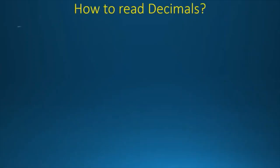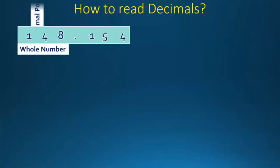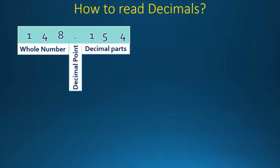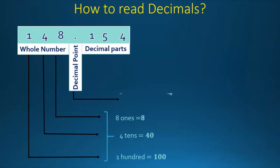First, we will learn how to read decimals. We know about this decimal number which is 148.154. The whole number part is 148, the decimal point is of course the decimal point, and 154 is the decimal part. Now 1 in the whole number is equal to 100, and 4 in the whole number is 4 tens, which is equal to 40, and 8 in the whole number is 8 ones, or 8.